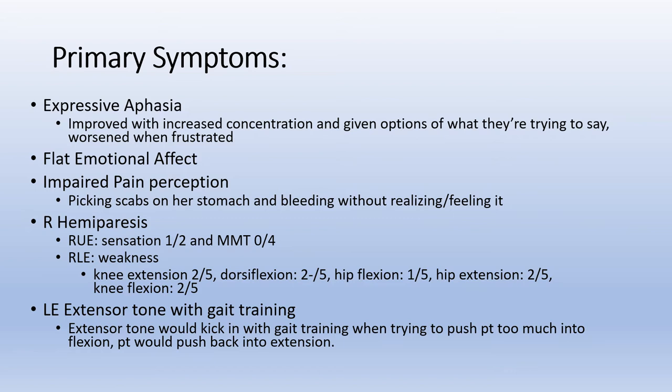Her primary symptoms include expressive aphasia, which improved with increased concentration and when given options of what she was trying to say, and worsened when she was frustrated. She has a flat emotional affect, impaired pain perception as previously explained, and right hemiparesis with right upper extremity sensation loss and 0/5 manual muscle testing, as well as right lower extremity weakness. She also expressed some lower extremity extensor tone, which wasn't apparent until gait training began — when pushed into flexion, she would push back into extension.